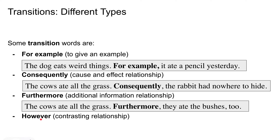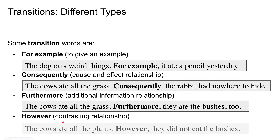And then we have 'however' — this is for contrasting relationships. For example: 'The cows ate all the plants. However, they did not eat the bushes.' That's a contrasting relationship, showing a contrast to our expectations.